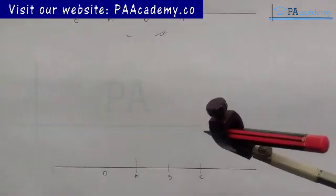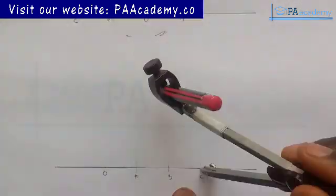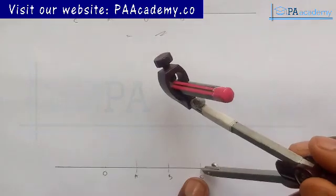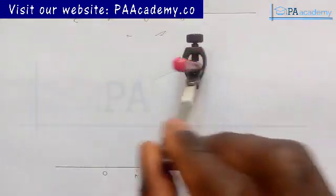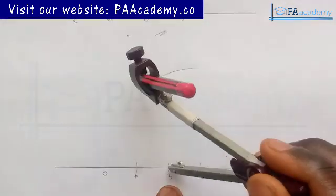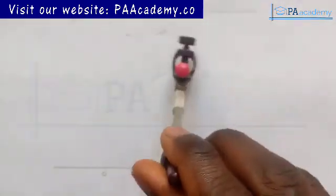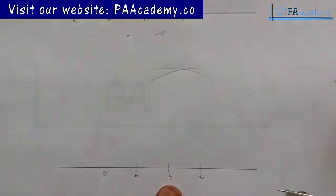Now what we want to do next is from point B and then from point C, you are going to draw an arc with that length. Then you come to point B and then you also draw an arc.